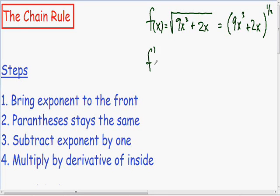Our derivative is going to be... Before I get started, I'm just going to copy and paste to save a little bit of time. So our first step using the chain rule is we want to take our exponent and bring it to the front. So I'm going to take my one-half and multiply it in the front. The inside of the parentheses stays exactly the same.